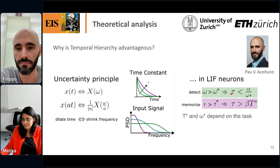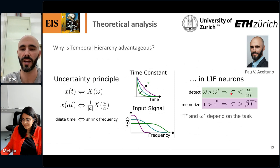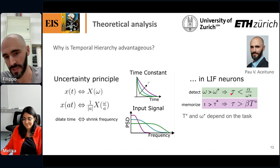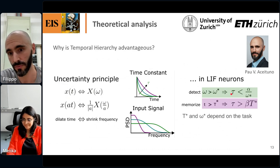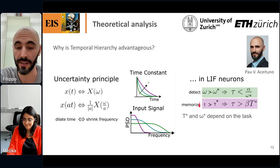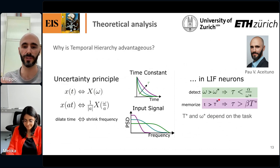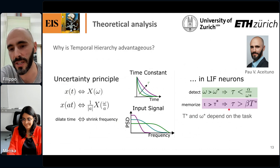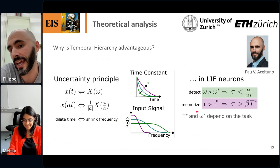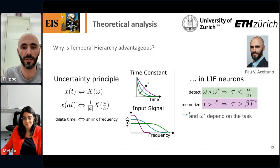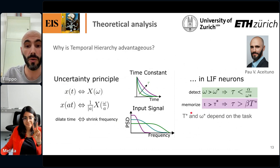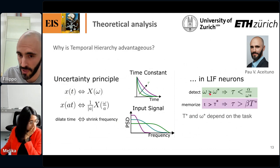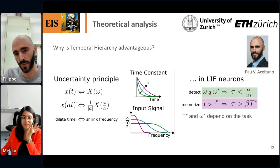Taking the equations of a leaky integrate-and-fire neuron, you conclude that if you need to detect frequencies within a relatively large range, your timescales need to be short — the higher the frequencies you need, the shorter the timescales must be. But the longer you need to integrate over time, the longer your timescale must be. How long and how many frequencies you need depends on the task — which means sometimes it might be impossible to fulfill both conditions in the same neuron.